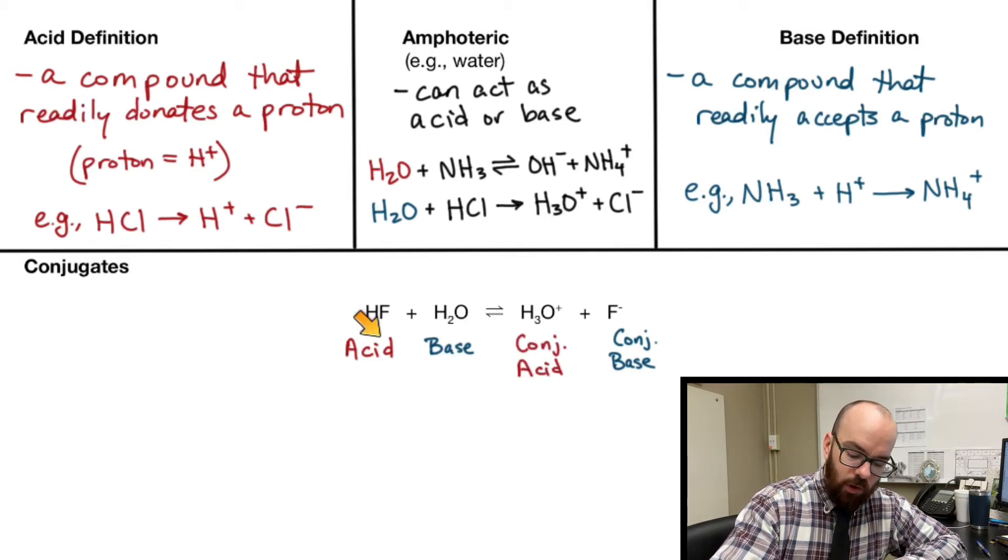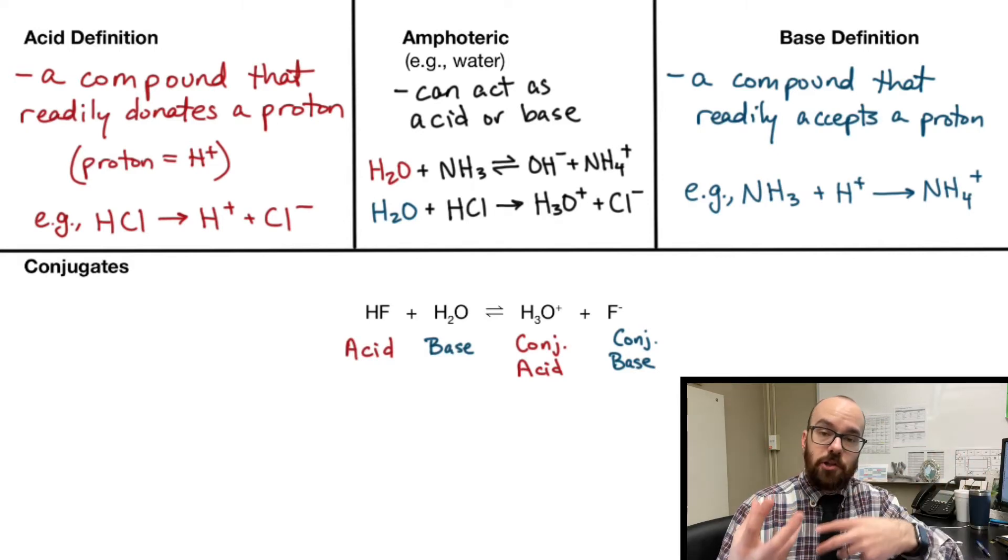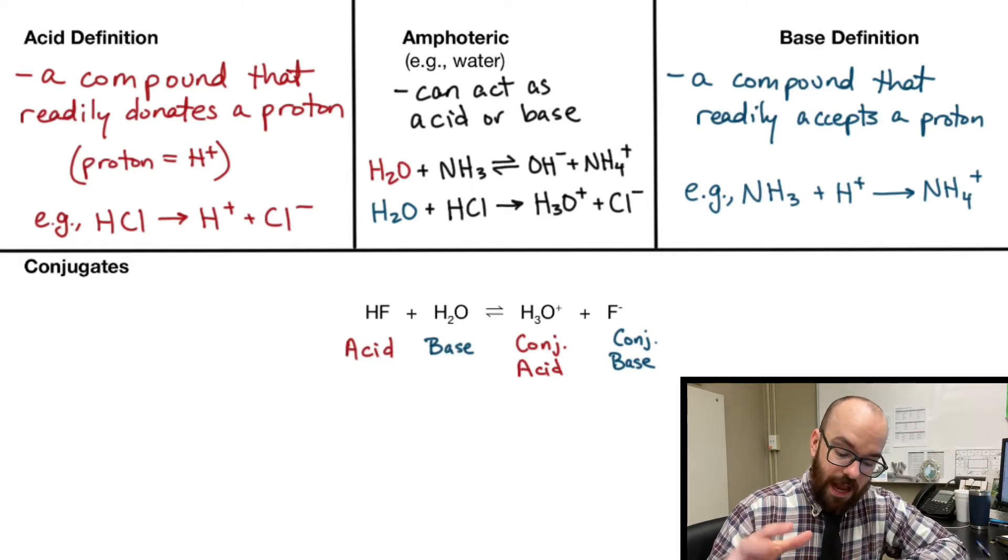So your acid will look like your conjugate base, and your base will look like your conjugate acid, either with the hydrogen added or hydrogen removed. That's how you identify conjugate acids and bases.